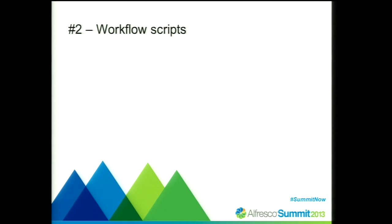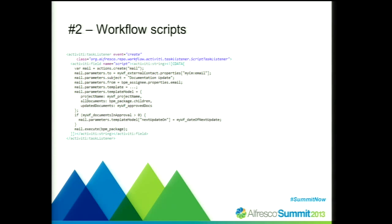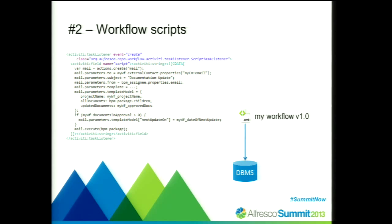There can also be issues dealing with scripts in workflows. For example, if you have a simple script task in an Activiti workflow that sends out an email in an approval workflow about a documentation update — during an active approval workflow, the document might get updated again due to reviewer feedback, and that should trigger a notification to the next reviewer. So this script task creates a notification email, fills a template model, generates and sends it.